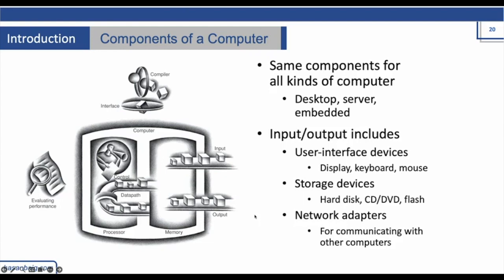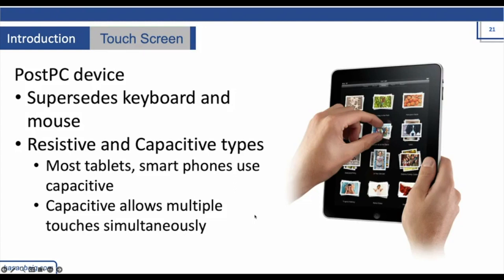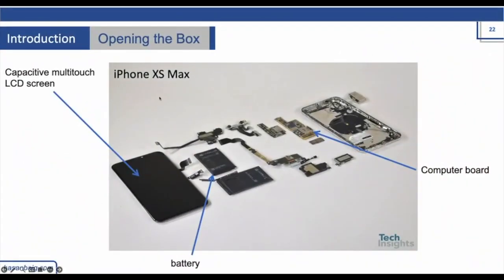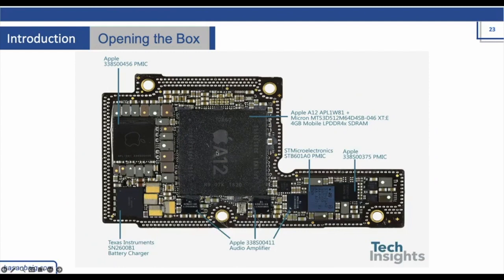But if you talk about post-PC devices like touchscreen tablets, we have some additional advanced components like resistive and capacitive touch types — capacitive touch allows multiple touches simultaneously. If we go further deep into something like the iPhone XS Max, it has an LCD screen, battery, computer board, and additional modules like a Wi-Fi or internet module. If you look into the computer board, it consists of a processor — here A12 is the model of the processor — along with components like a Texas Instruments battery charger, external memory, and so on.